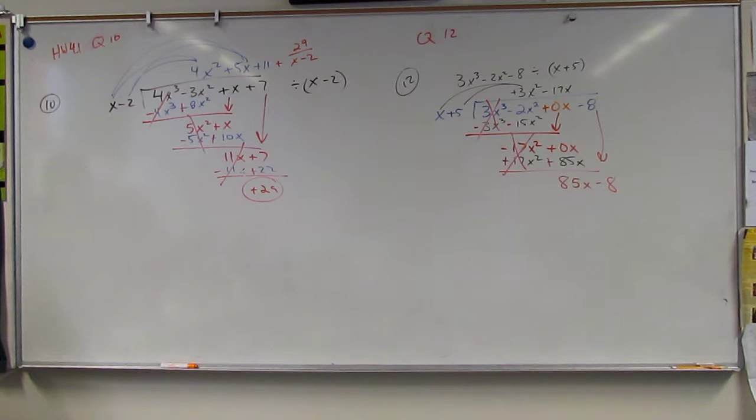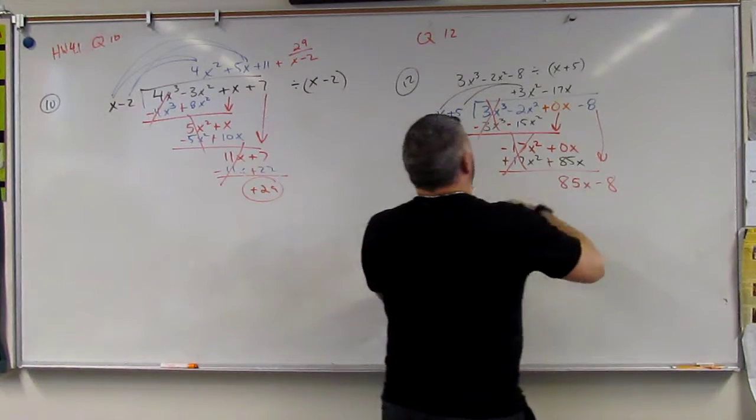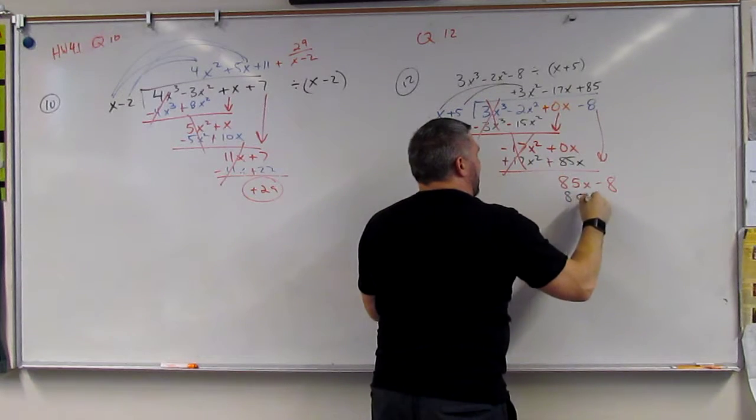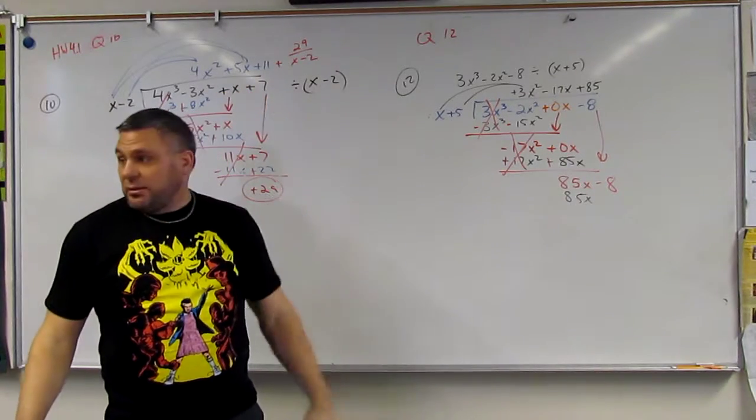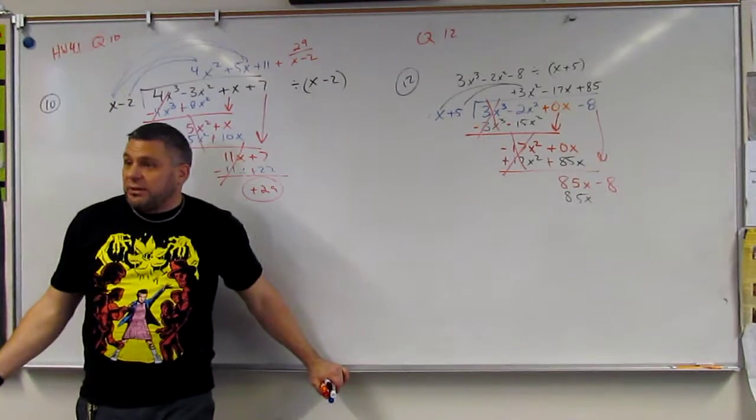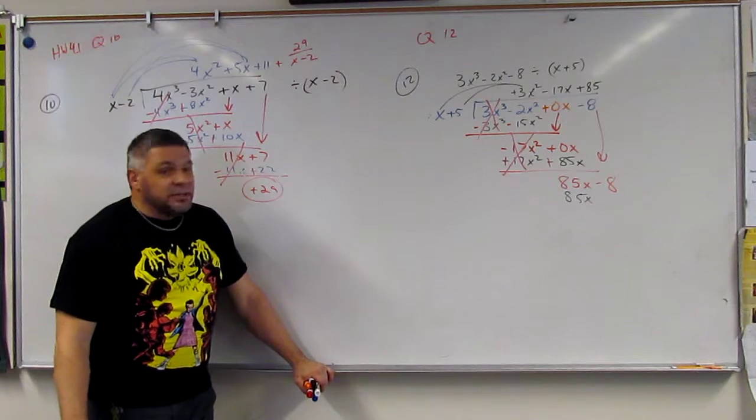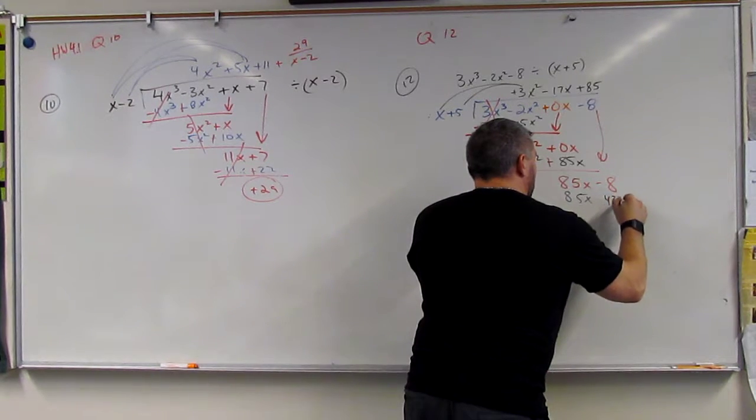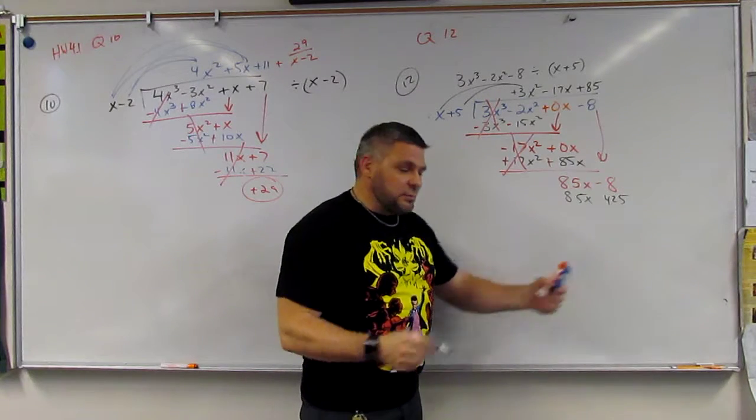And then what times x is 85? 85. So I'm going to go plus 85, and that's going to be times x of 85x. And then what's 85 times 5? That's a big number. Right? So we've got 80 times 5 is 400, and 5 times 5 is 25, so 400 and 25. Now, is that positive? Yes. So do I put anything? No.